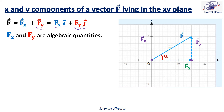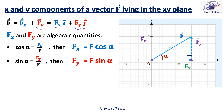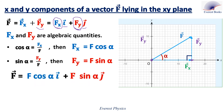Now let's determine the expressions of Fx and Fy. Look at the figure. In the right-angled triangle formed by F, Fx, and Fy, cosine alpha equals the adjacent over the hypotenuse. So cosine alpha equals Fx over F, then Fx equals F cosine alpha. Sine alpha is given by the opposite over the hypotenuse. So sine alpha equals Fy over F, then Fy equals F sine alpha. Replacing these values, the vector F can be written as F cosine alpha i plus F sine alpha j.